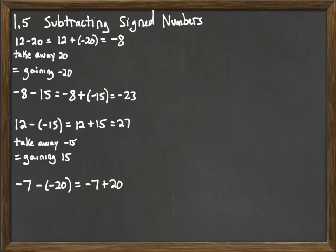Since they have different signs, we subtract them. 20 minus 7 is 13. And because 20 is bigger, we make that positive 13.